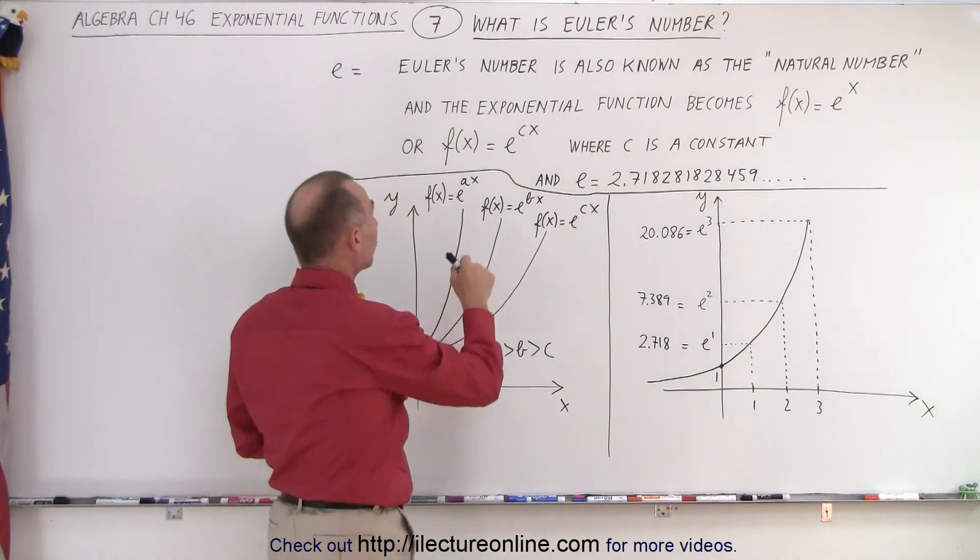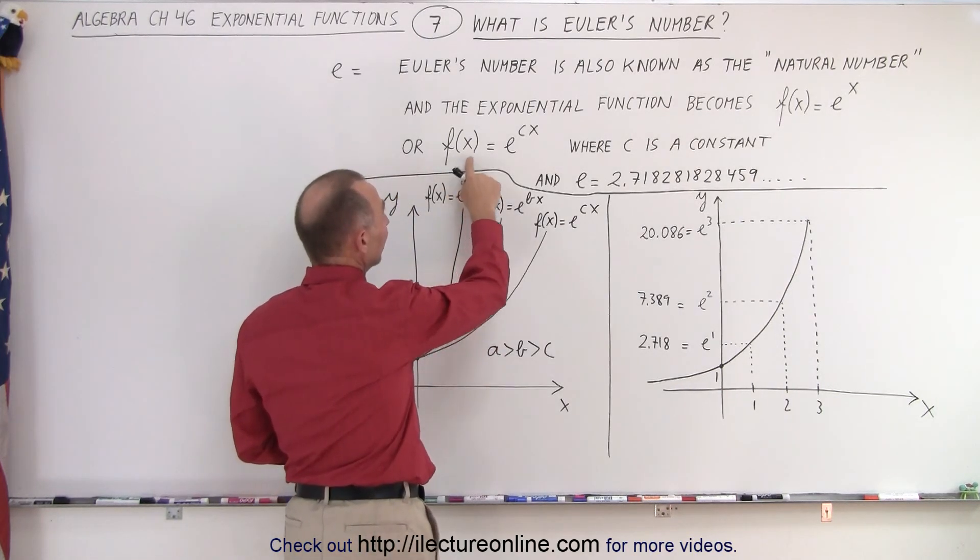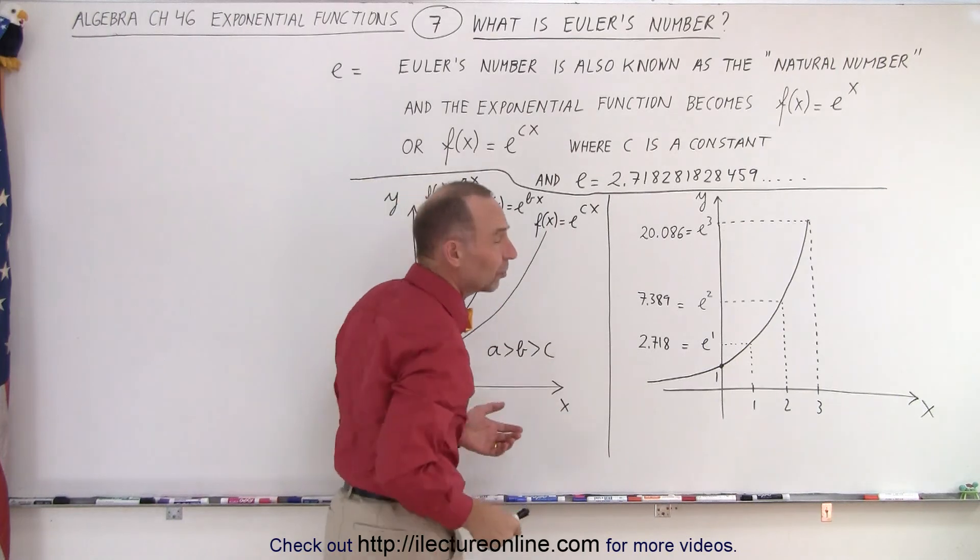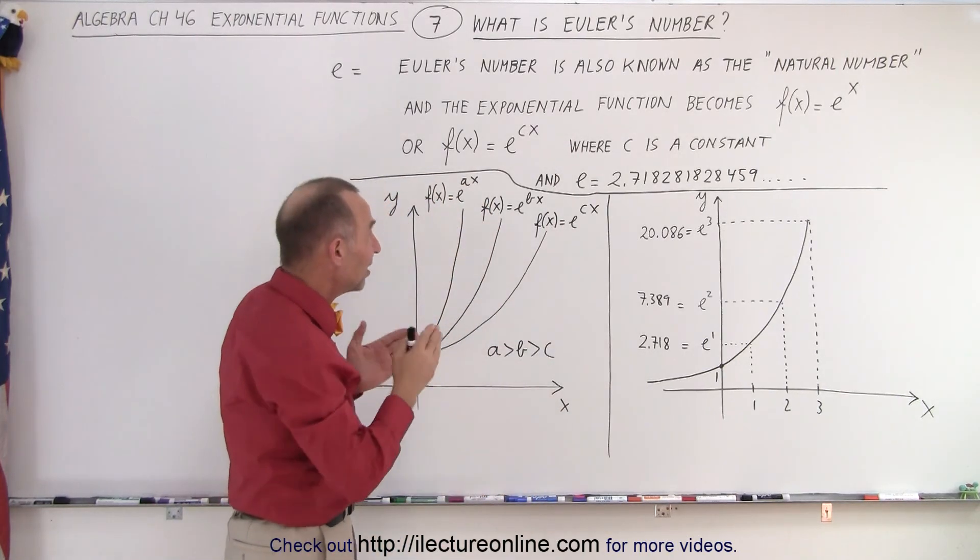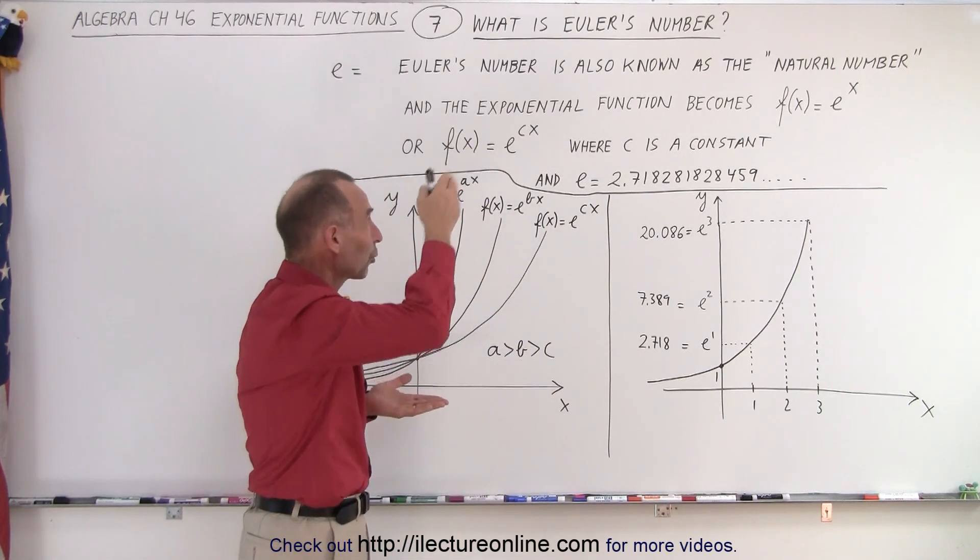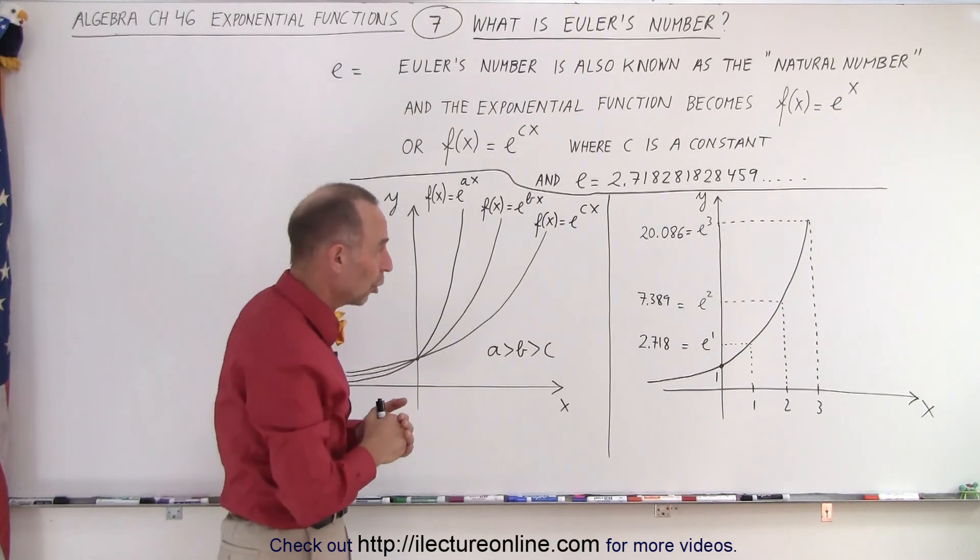Now, we sometimes also write our exponential function, f of x, as E to the cx, where c is another constant. Because as c becomes bigger, the function grows more quickly. As c becomes smaller, the function grows more slowly.